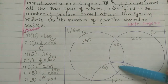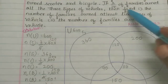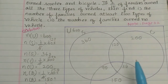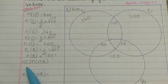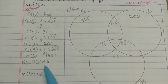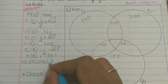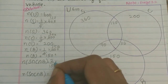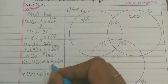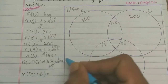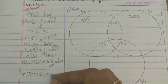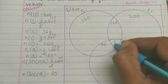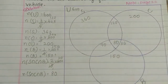That is how many people use scooter as well as car as well as bicycle. This equals 2 by 15 of 600. 600 divided by 15 is 40, then 2 into 40 is 80. So total of 80 families have all 3 vehicles.